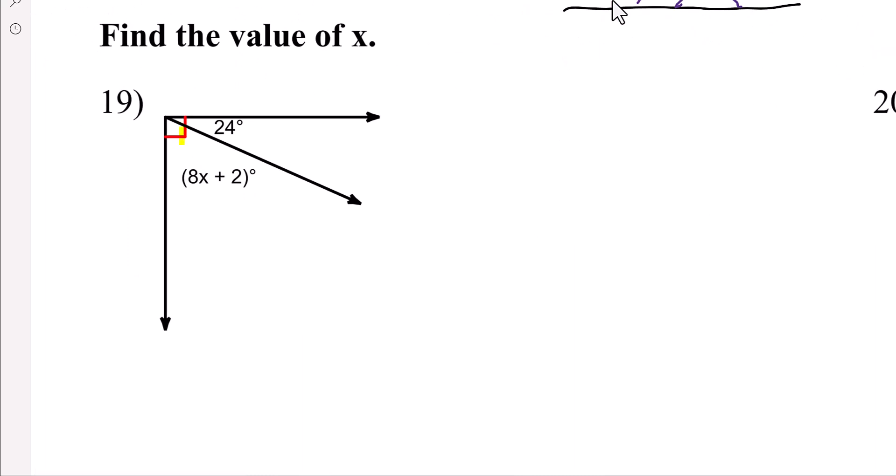These two angles add up to 90, so they're complementary. That means these two amounts, 24 degrees, and which means the plus sign between numbers, the 8x plus 2 in degrees, they add up to 90 degrees. Well, remember, whenever you want to get the x by itself, you have to start from the outside in. So we have on the outside this positive 24, so to cancel it, we're going to subtract 24 degrees.